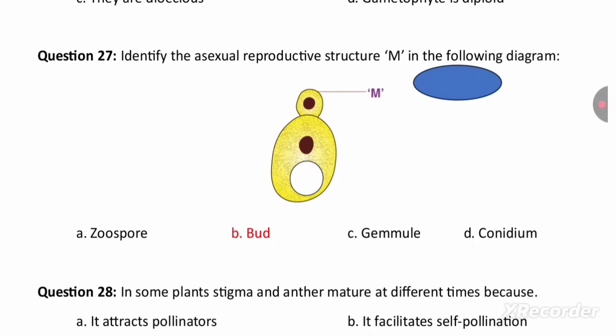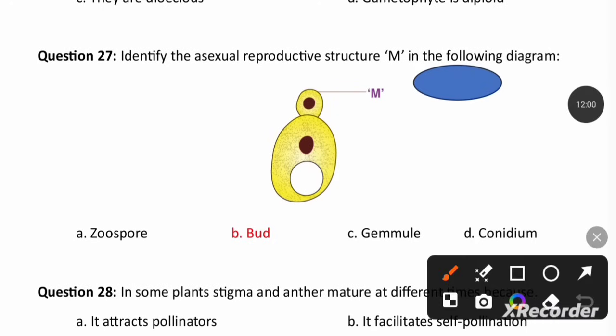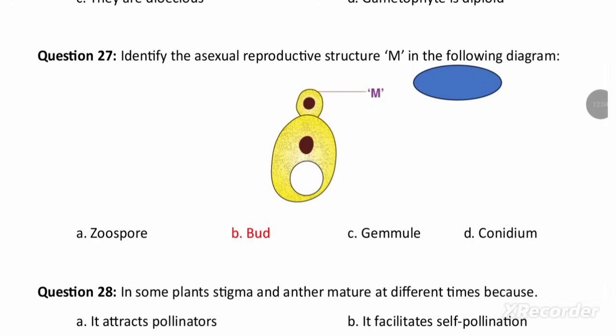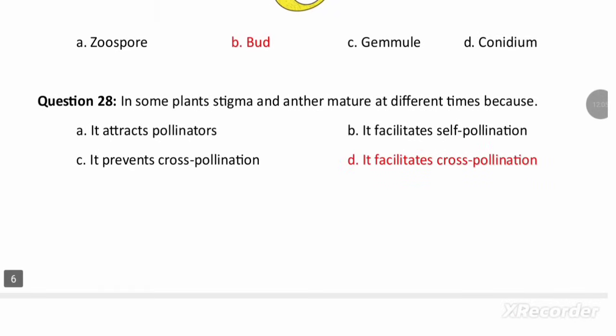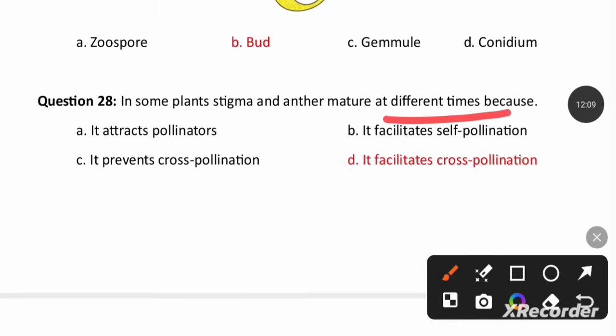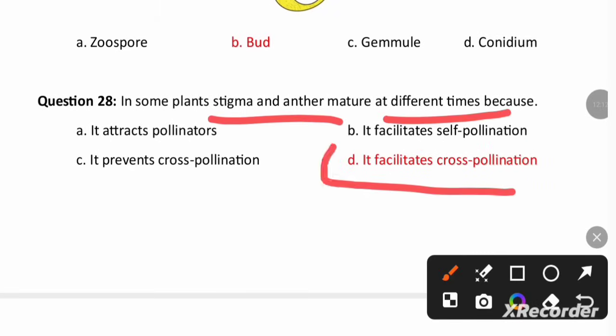Identify the asexual reproductive structure: in yeast, M is identified as a bud, which is an asexual reproductive structure. In some plants, the stigma and anthers mature at different times — this is to increase cross-pollination and decrease self-pollination. This is one type of outbreeding device.